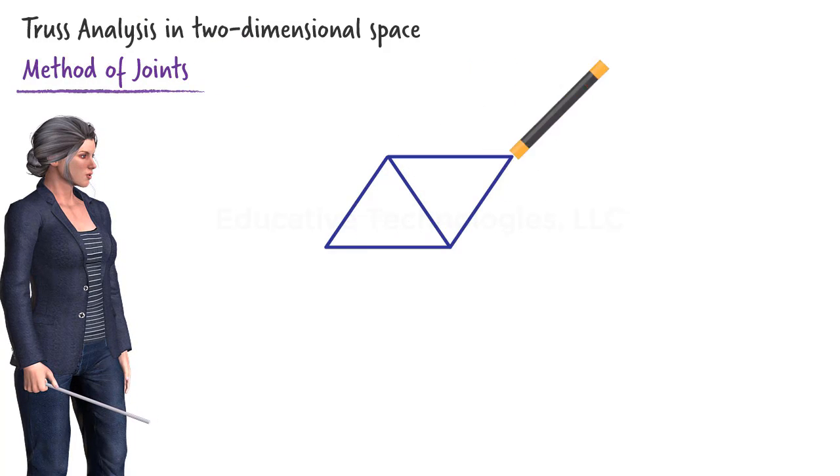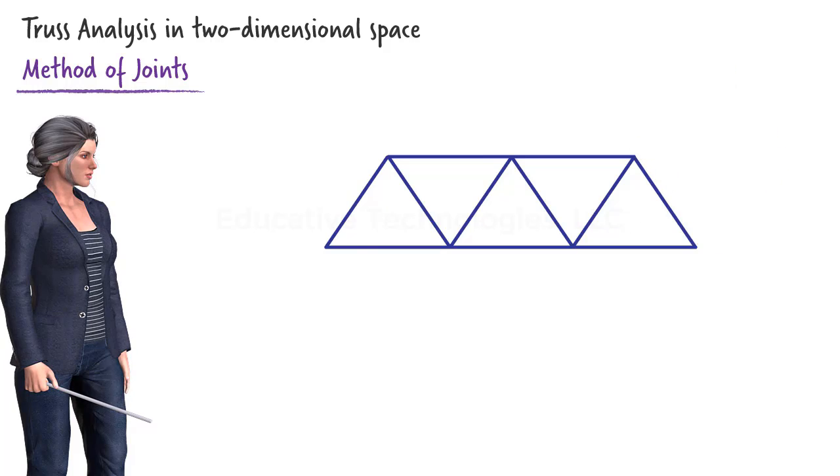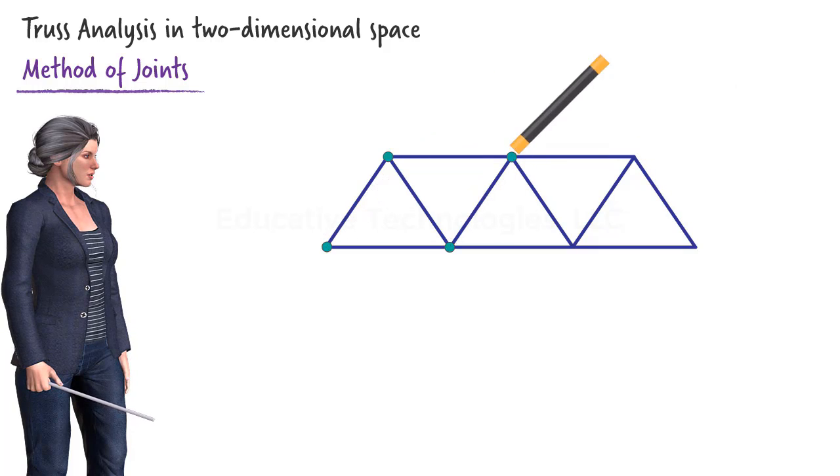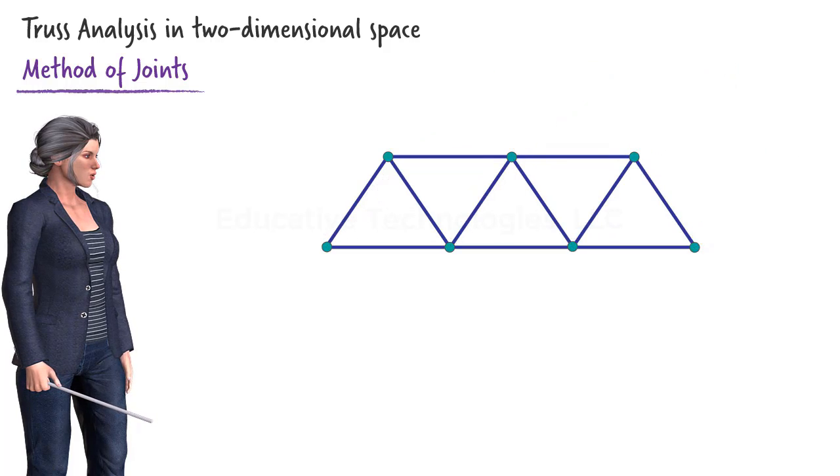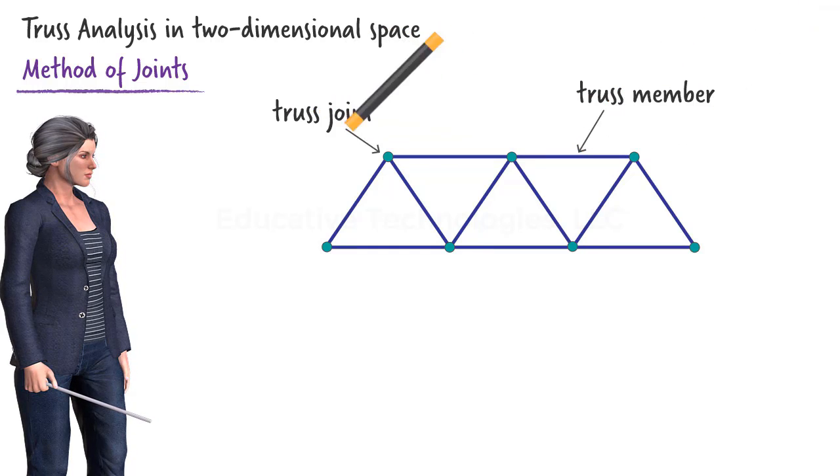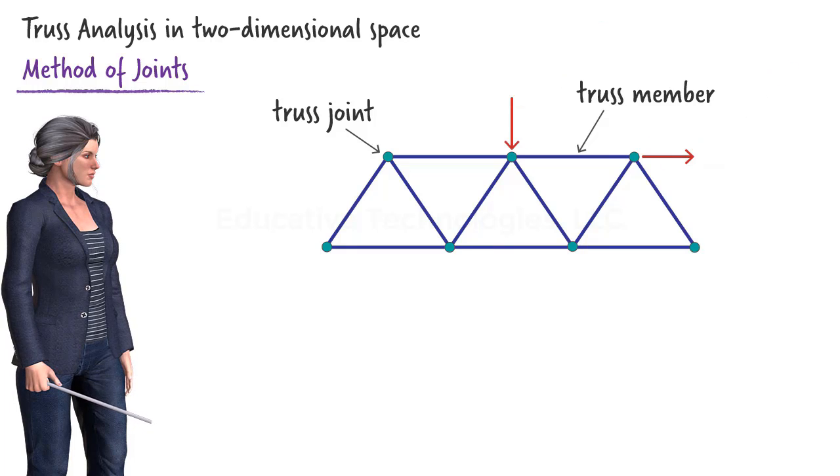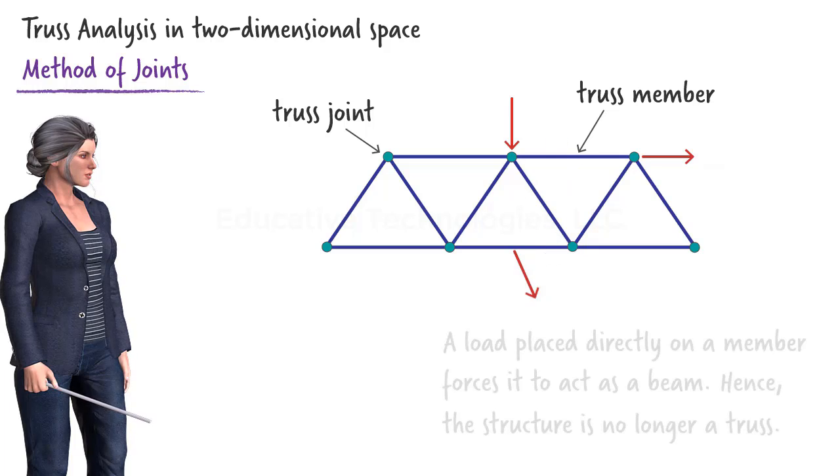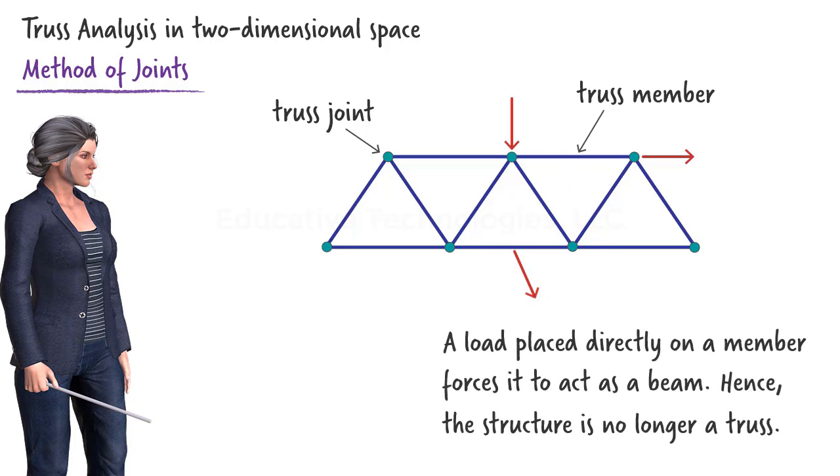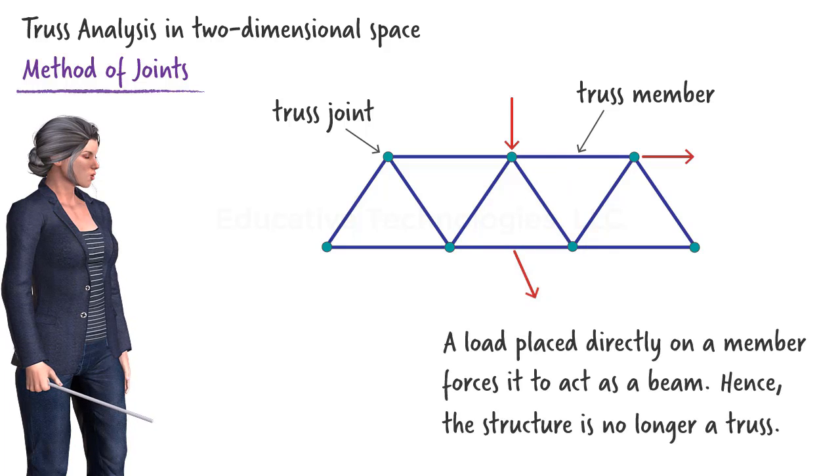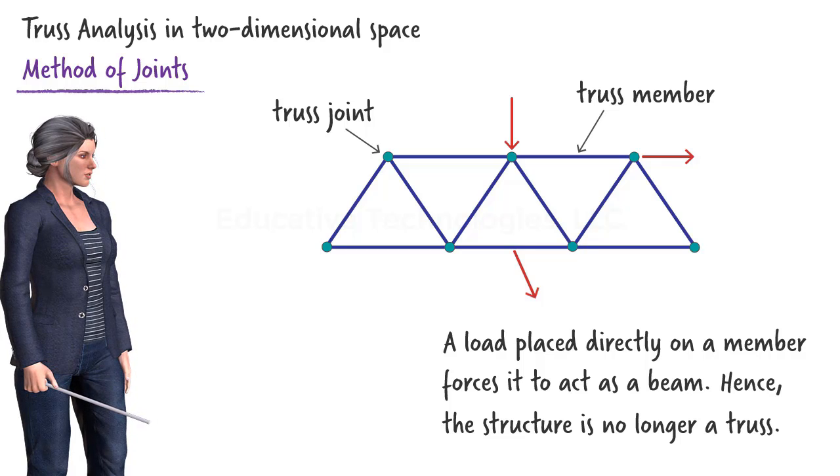A truss can be viewed as a network of interconnected slender members. A point at which two or more members are connected together is called a joint. A truss can carry loads that are placed at its joints only. If a load is placed directly on a member like this, then it needs to be treated as a beam, since the load causes internal shear and moment forces to develop. Such a structure can no longer be viewed as a truss.